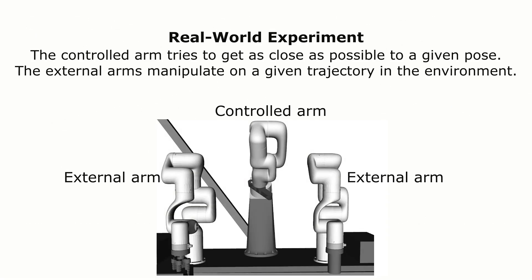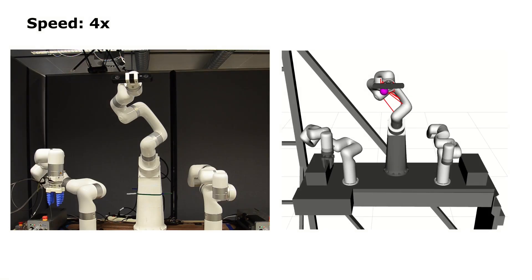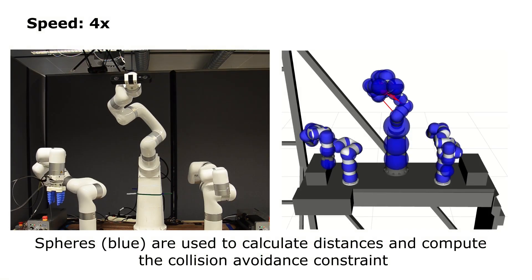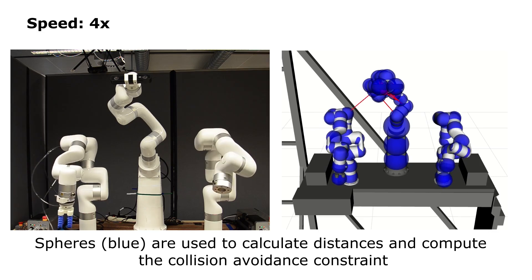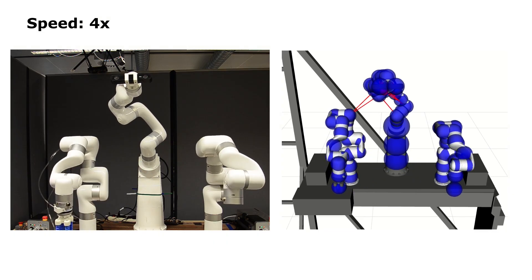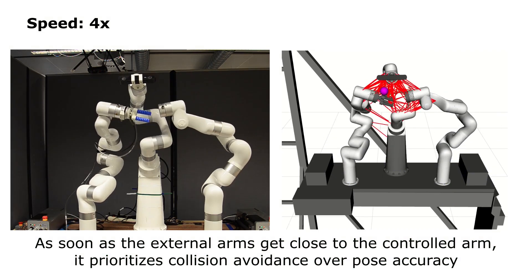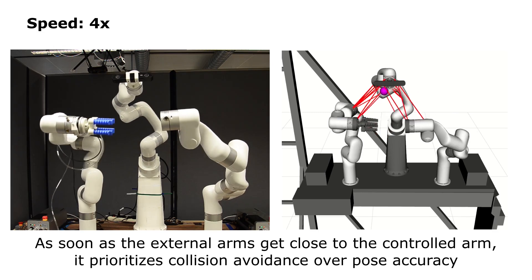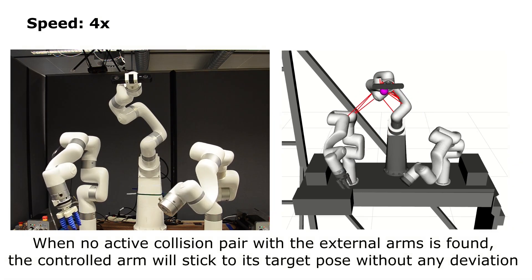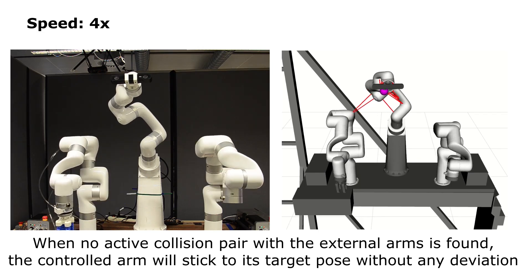We deployed Don IK on a 3-arm robotic system to control the middle arm to maintain a desired pose while the other two arms execute predefined trajectories. The arms are modeled as a series of spears for quick collision distance computation. When the two external arms get close to the controlled arm, it moves away from the goal pose to prioritize collision avoidance. As the external arms move away, the controlled arm moves back to the goal pose as there are no active collision pairs with the external arms.